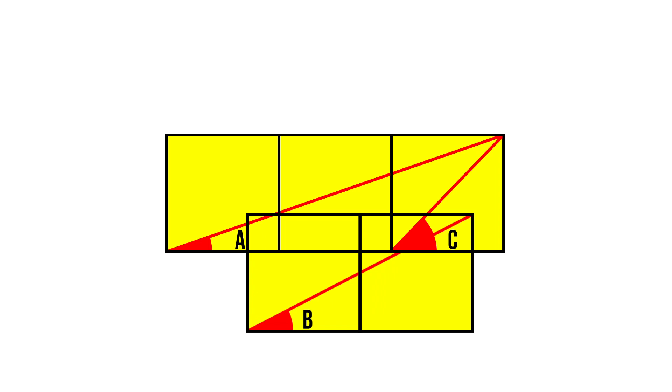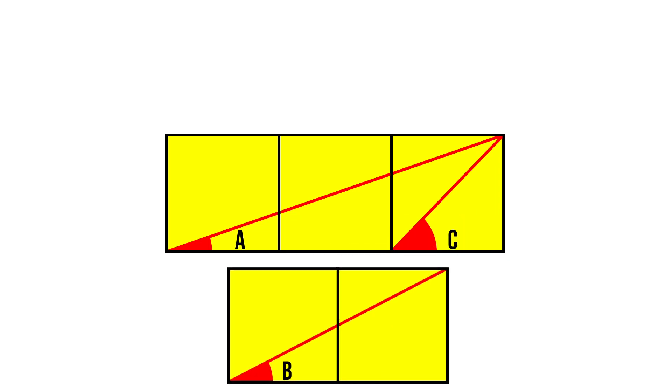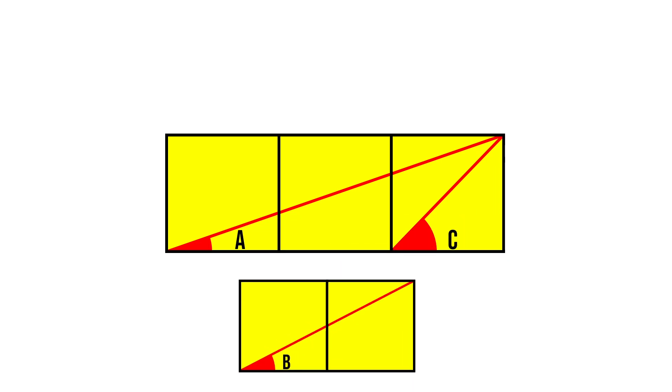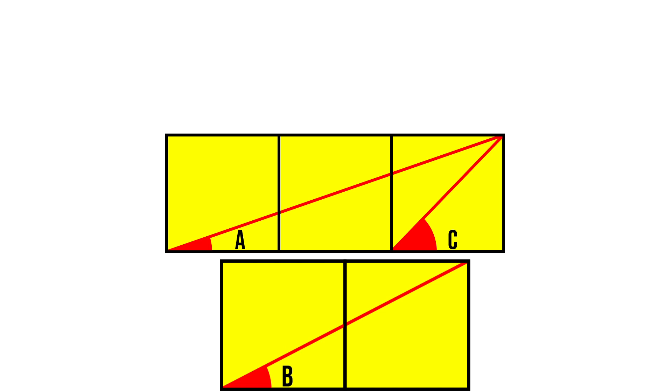The hint is that if you for example look at angle B, we can scale the squares up or down as we please, and the angle will remain the same.